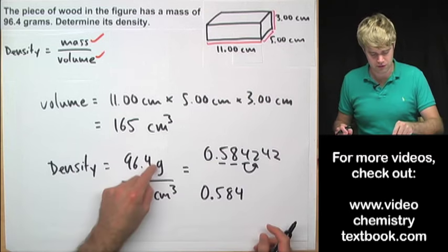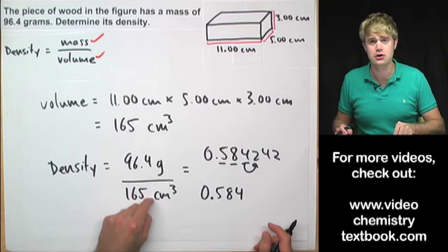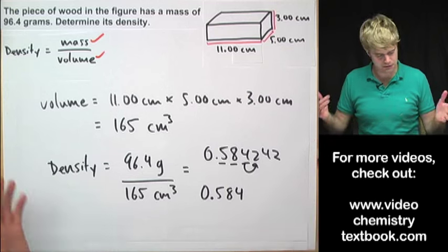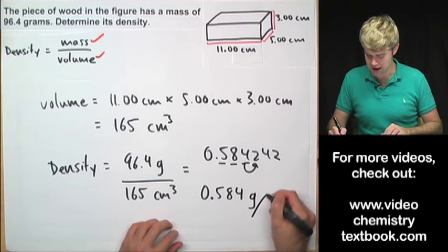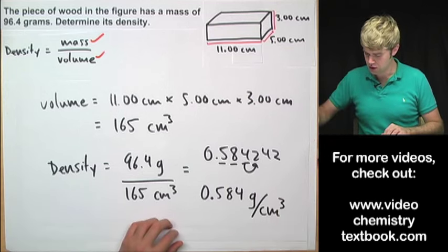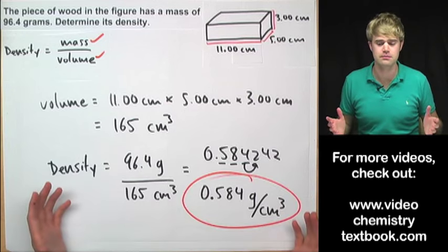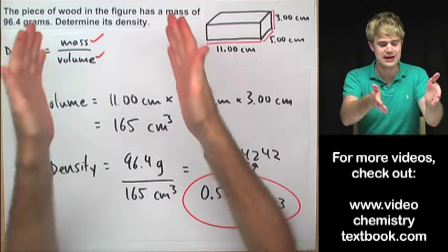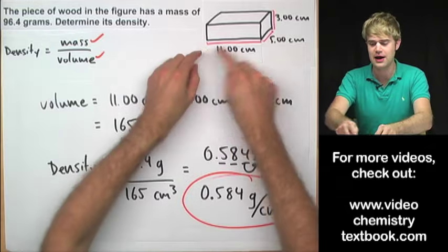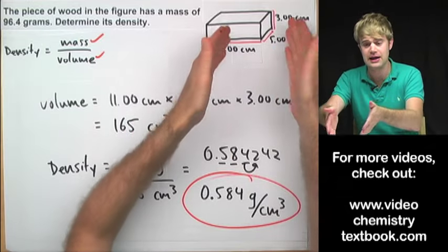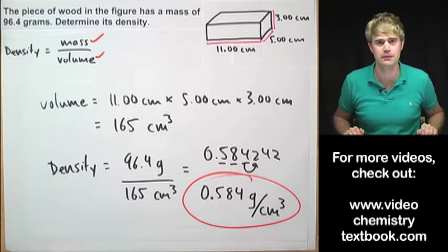What are the units here? I have grams, centimeters cubed, neither of them canceled out. So I'll report my density as grams over cubic centimeters. And that's how I do a problem like this. Just to review, I didn't get the density in the problem, so instead I had to multiply the length, width, and height together to get the volume and then I could go from there.